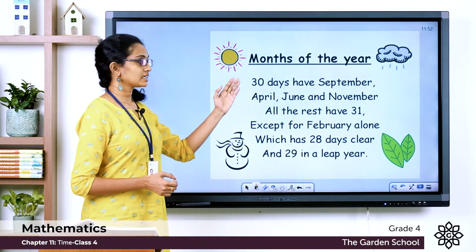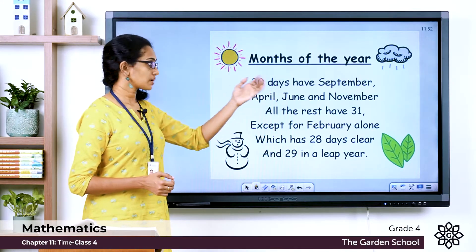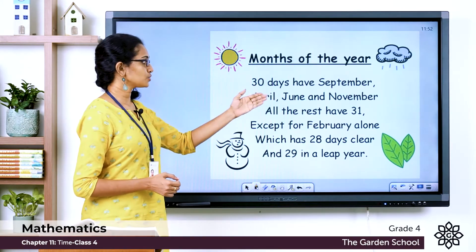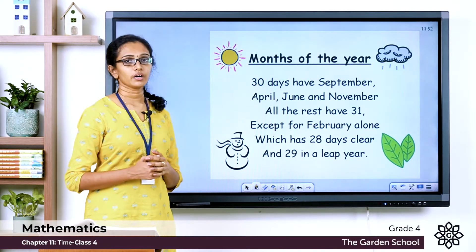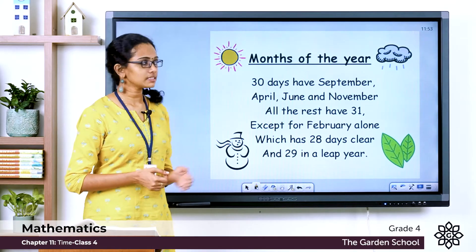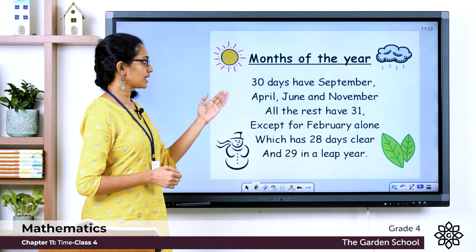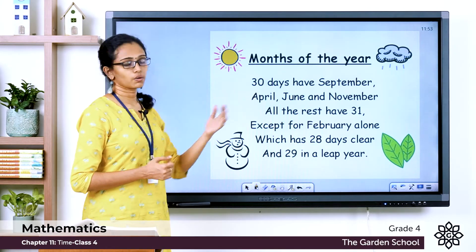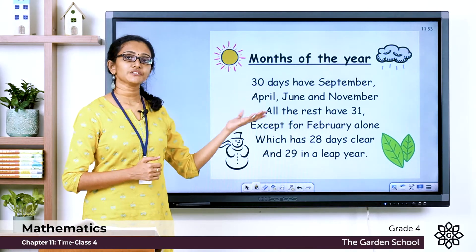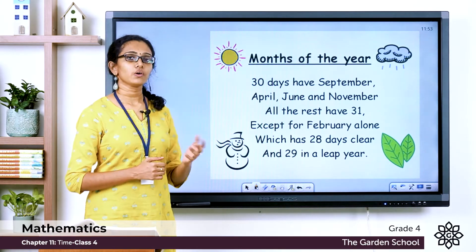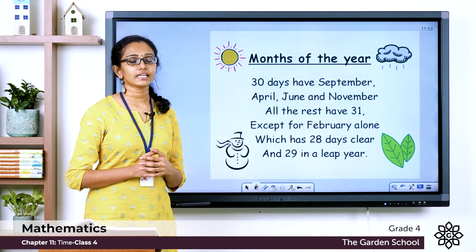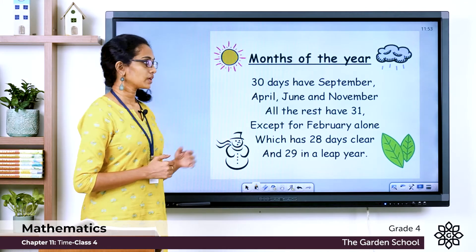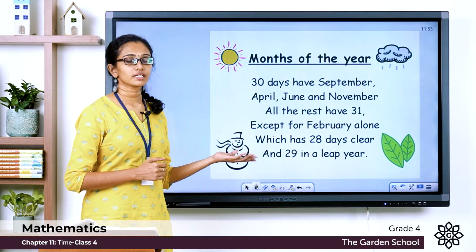So the rhyme says that 30 days have September, April, June and November. These 4 months have only 30 days in a year.